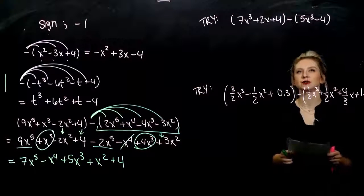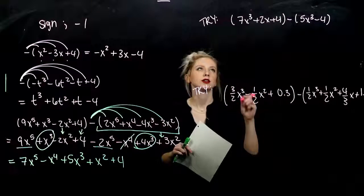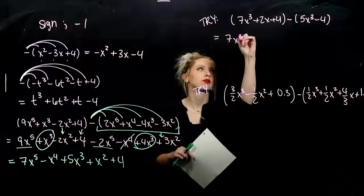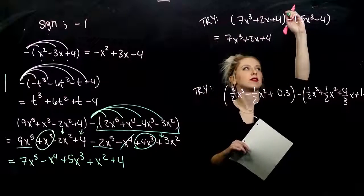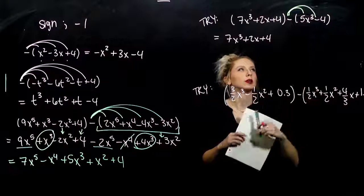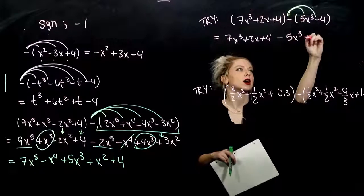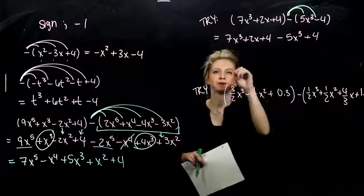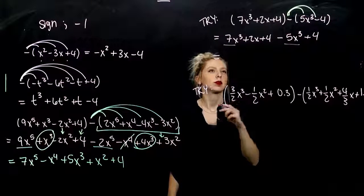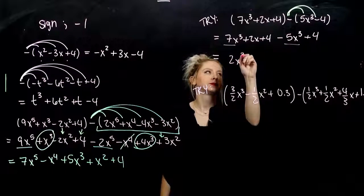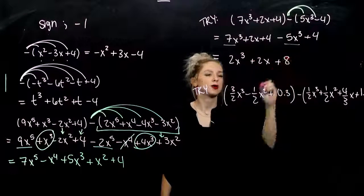Take these next two and subtract. First parentheses don't matter — drop them, copy everything down. Distribute the negative to every single term in the second polynomial: minus 5x cubed plus 4. Combining like terms, highest power to the third gives us 2 of them. Next is 2x. Adding constants together gives us 8.